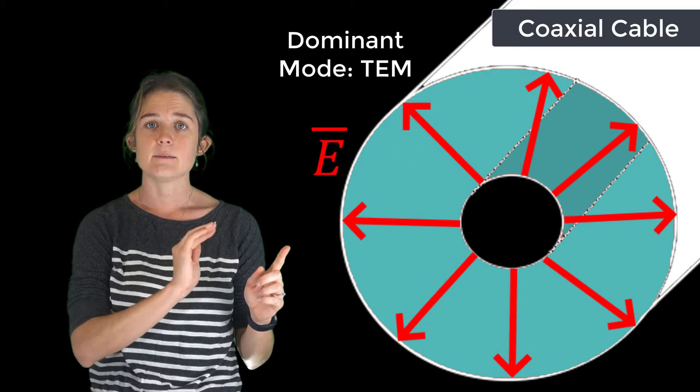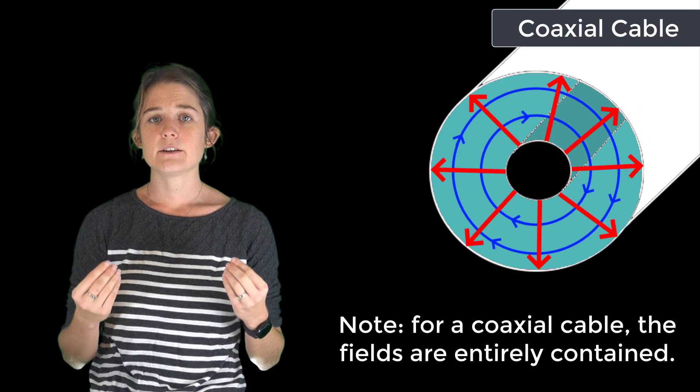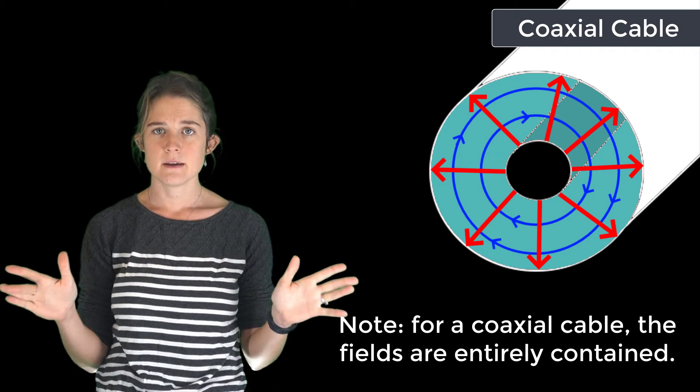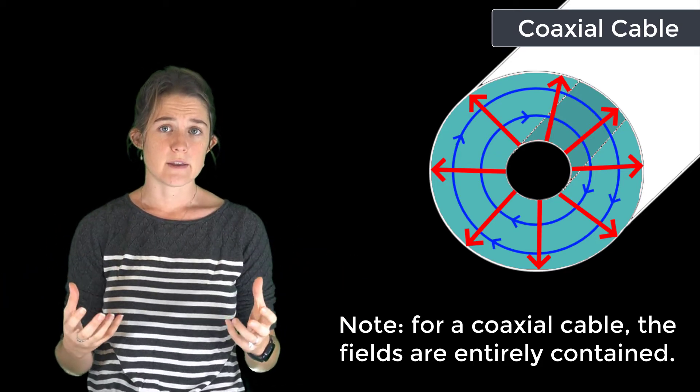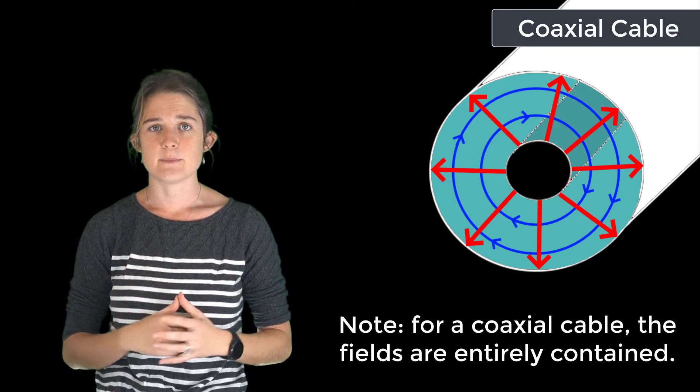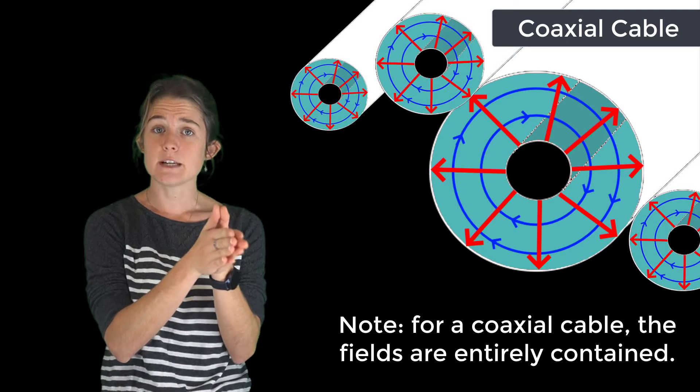The fields are entirely contained internally; none reach into the surrounding space. This is one of the greatest strengths of the coaxial cable transmission line because it means that it is completely protected from outside interference. You can run a great many coaxial cables near one another and they don't interact; each continues to operate completely independently.